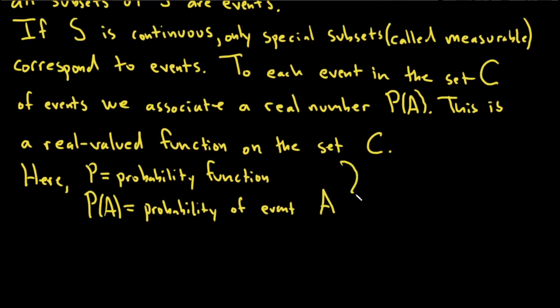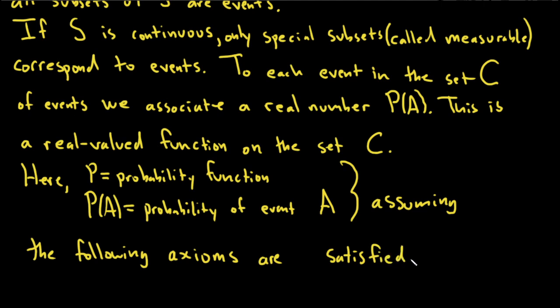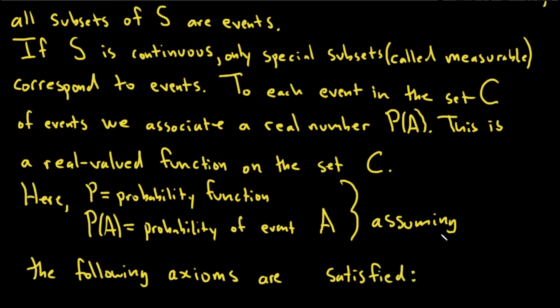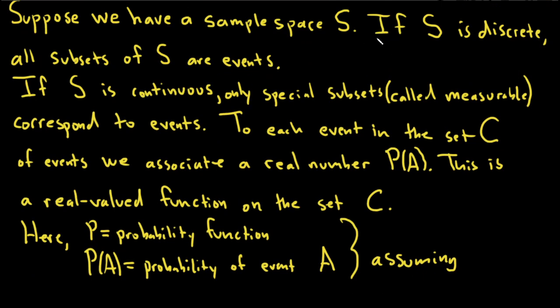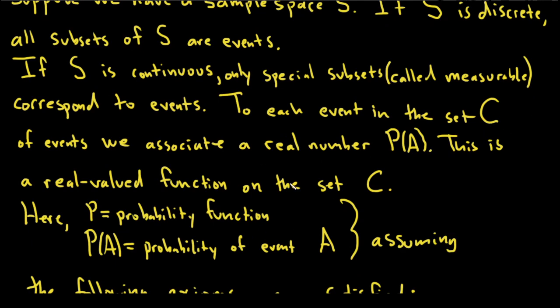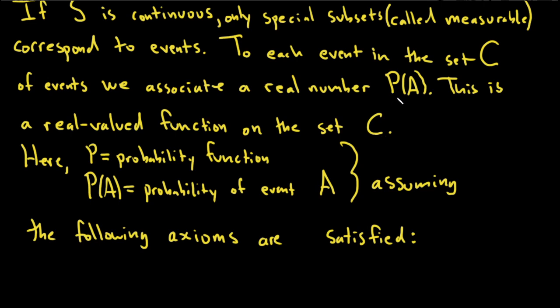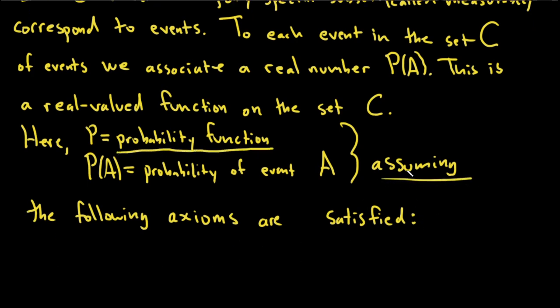And this is assuming the following axioms are satisfied. So we've finally gotten to the axioms. I just wanted to spend a little bit of time introducing the sample space and talking about the case where if it is continuous then we have the set C here, it's the set of all events, and we are going to associate a probability, a real number which we'll call P of A, and that will be the probability of A. And then we're going to say P is a probability function assuming that these things are satisfied. So we need this to work. These things are the things that we need for a probability function.